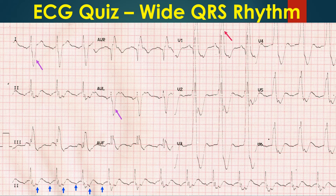2:1 conduction excludes the possibility of an AV node-mediated tachycardia, which would get terminated with the onset of AV conduction block. The QRS is very wide at 200 ms, with a tall slurred R-prime wave in V1 and a slurred S-wave in leads 1 and AVL, indicating complete right bundle branch block. QRS has right axis deviation suggestive of left posterior hemiblock in addition. Fragmented QRS is visible in inferior leads as multiple notches in the QRS complex.